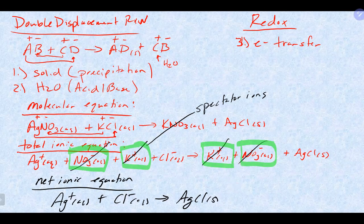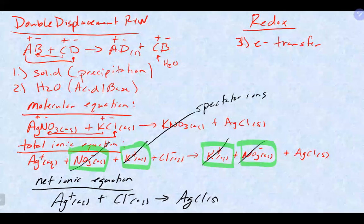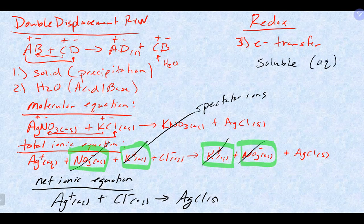We use solubility rules to decide whether a solid forms. A reminder: if something is soluble based on solubility rules, those compounds get the aqueous symbol. If they are insoluble, those get the solid symbol. People always get confused — soluble should be S, but it's not. S is solid, which is for insoluble things.